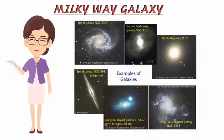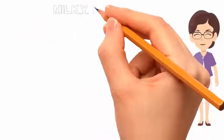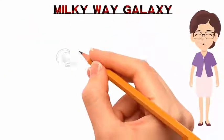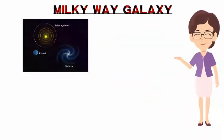There are estimated to be over a hundred billion galaxies in the observable universe. We live on a planet called Earth that is part of our solar system. But where is our solar system? It's a small part of the Milky Way galaxy.